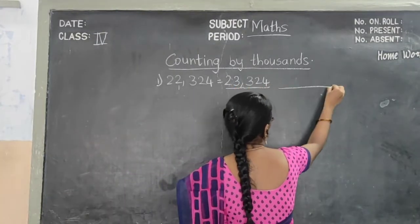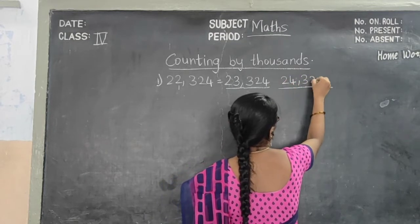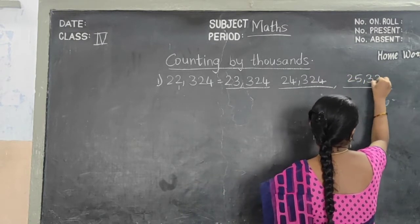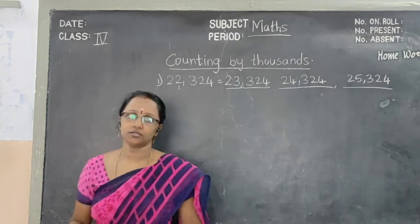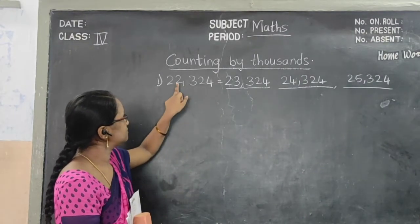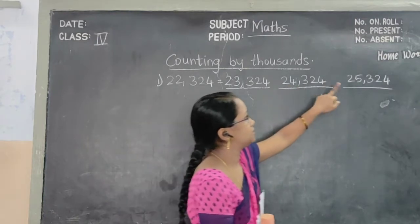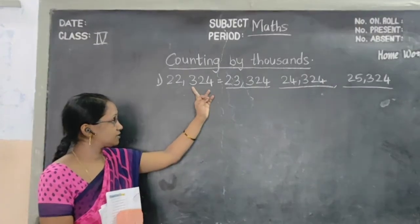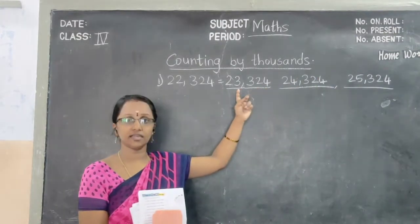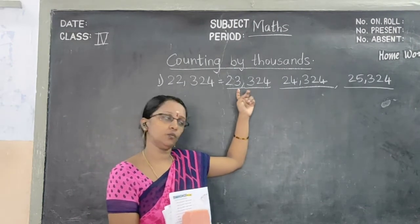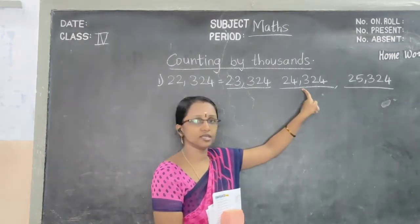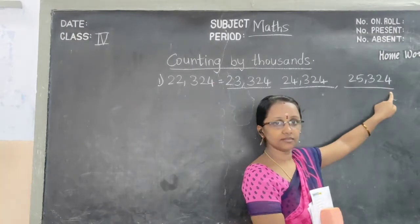So after 23,324, what will come? 24,324. And next is 25,324. Observe it — only in the 1000's place the number is changed. The remaining numbers, 324, are the same. We didn't change that. Only in the 1000's place we added plus 1. So the answers are: 23,324, 24,324, 25,324.